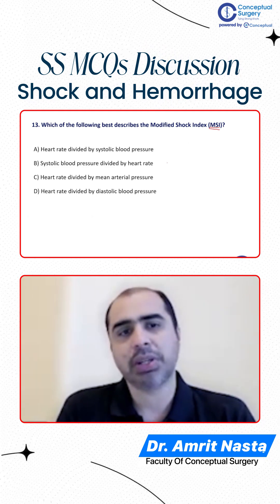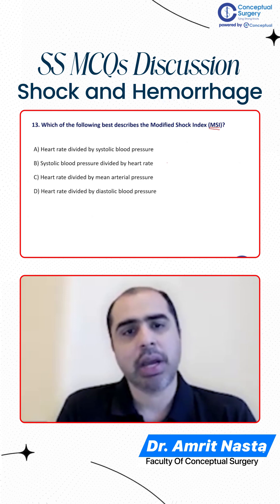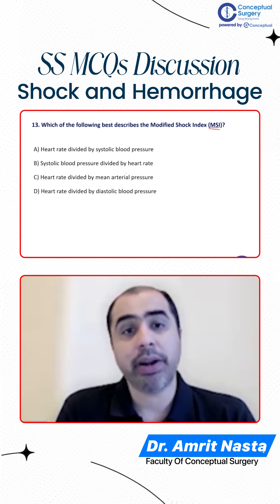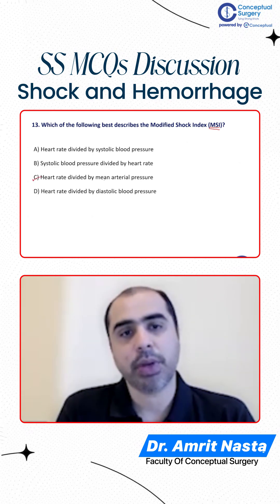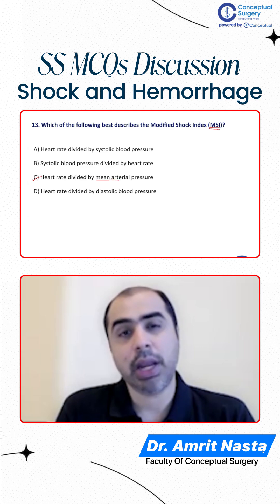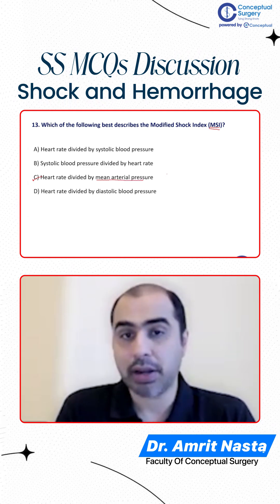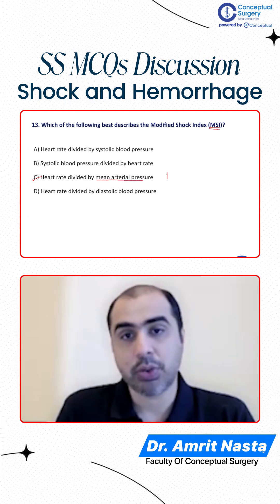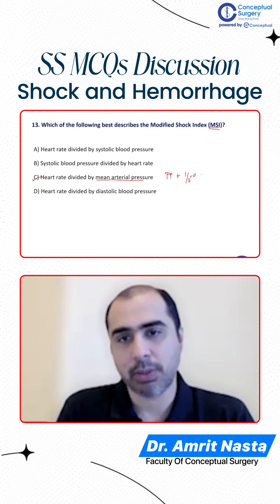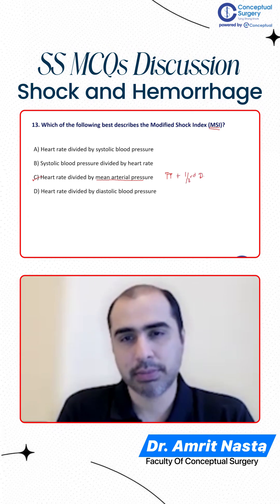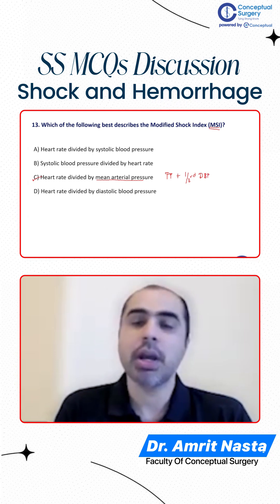What you are going to do is measure the heart rate and divide it by the mean arterial pressure. You must know how to measure mean arterial pressure — it is the pulse pressure plus one third of your diastolic blood pressure. That is your mean arterial pressure.